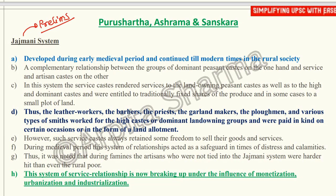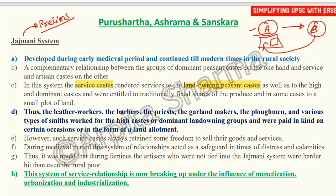In the Jajmani system, the service caste people render services to the land-owning peasant caste. For example, if person A has land and person B works on it, person B is entitled to fixed shares of the produce and in some cases a small plot of land in return for his services.